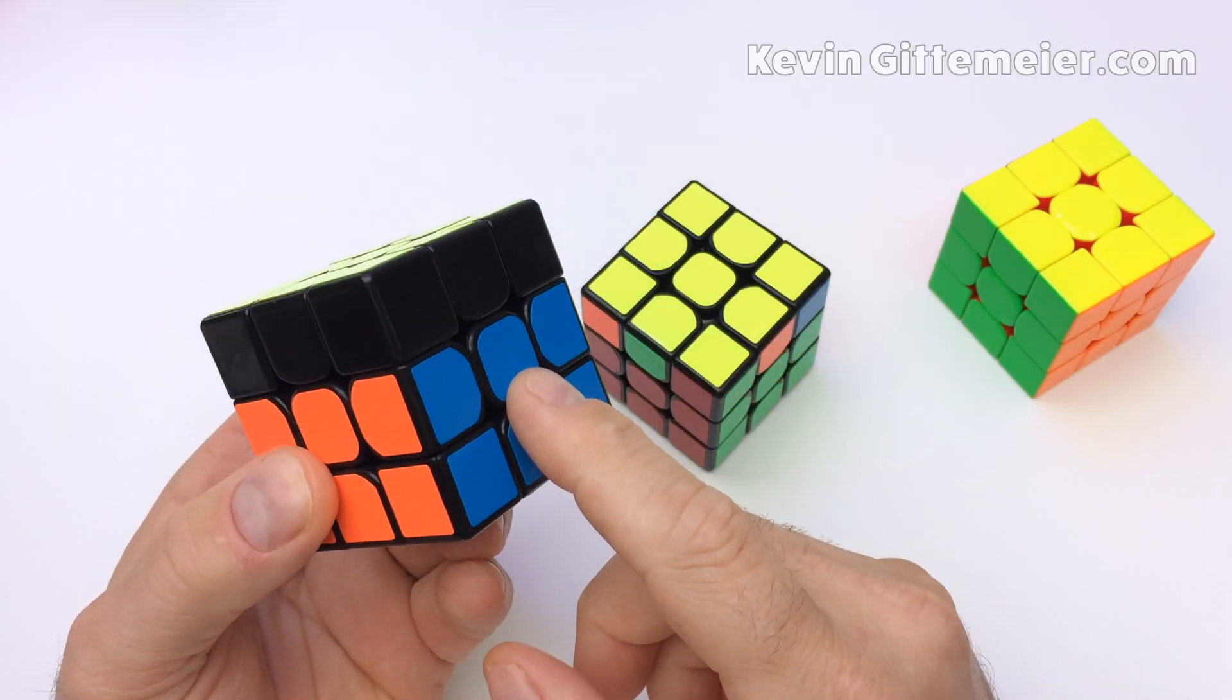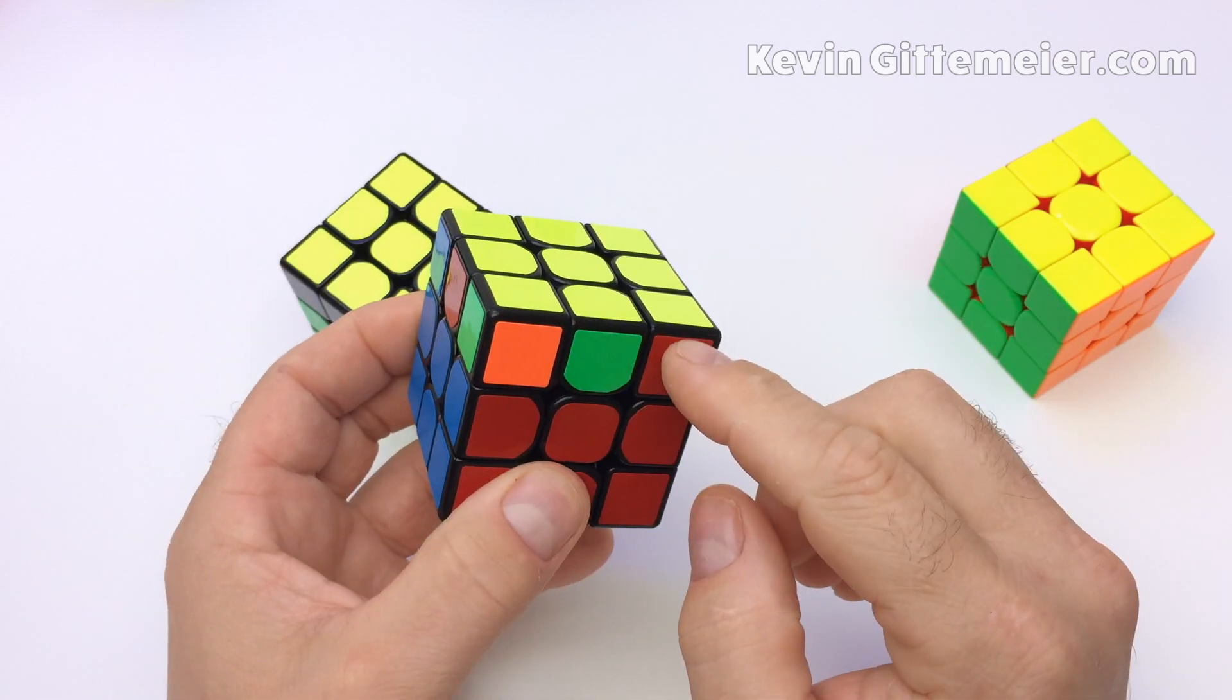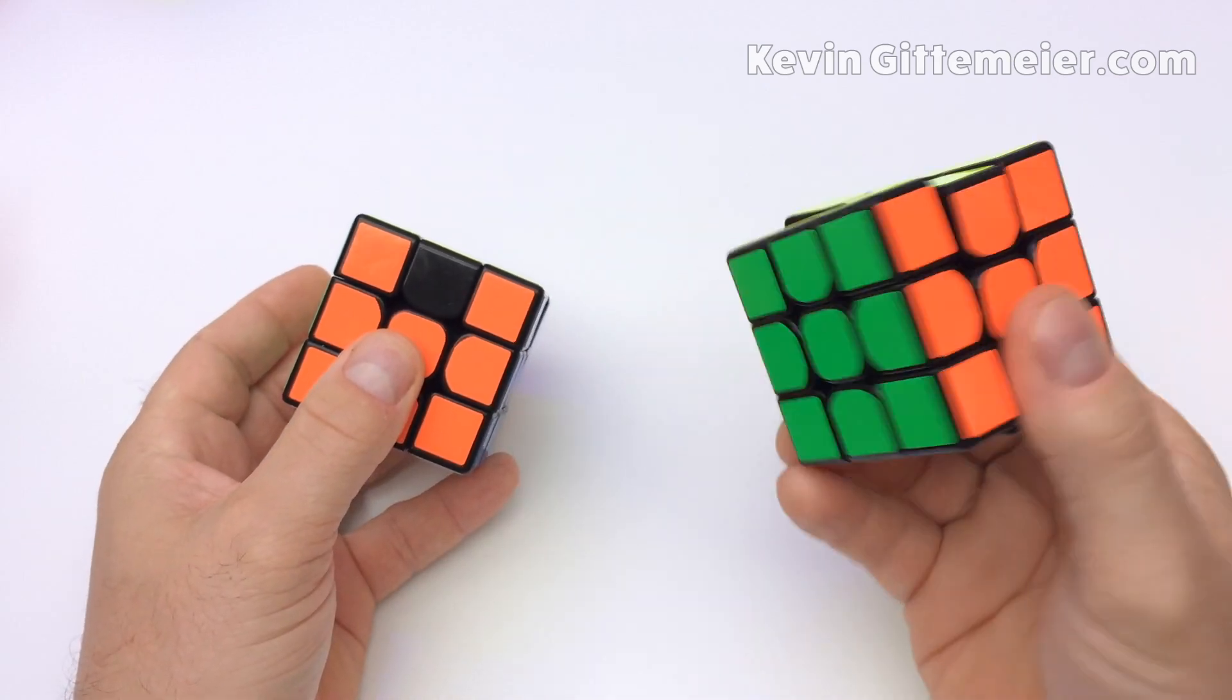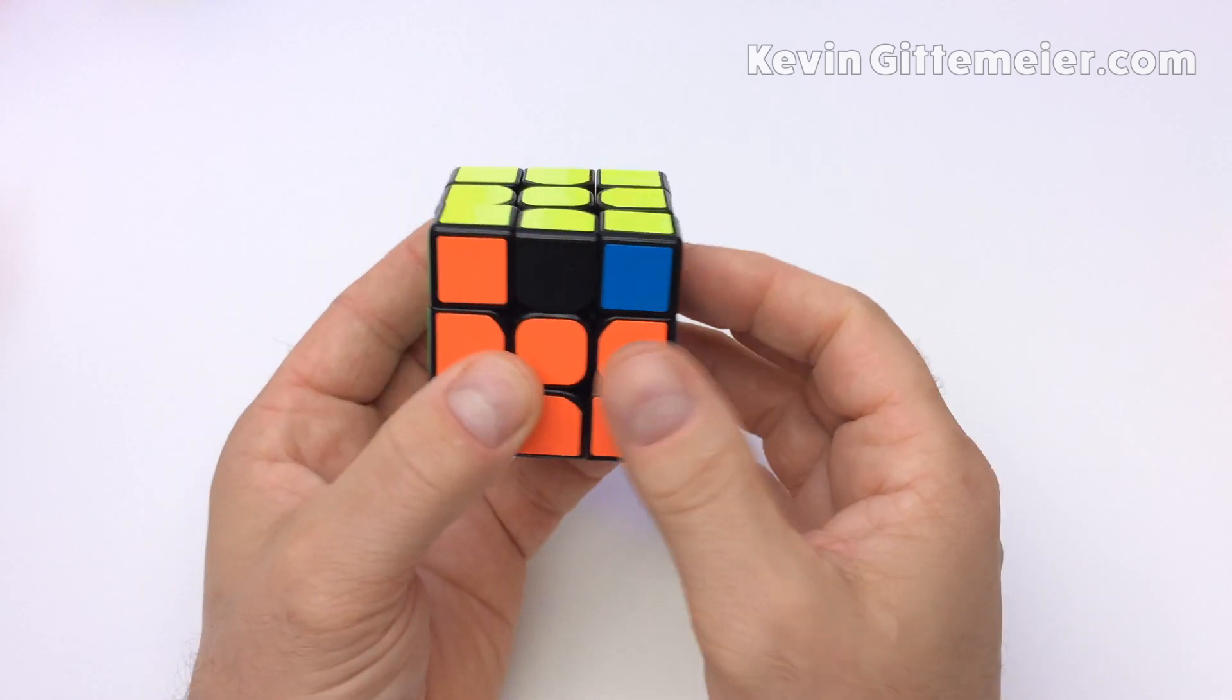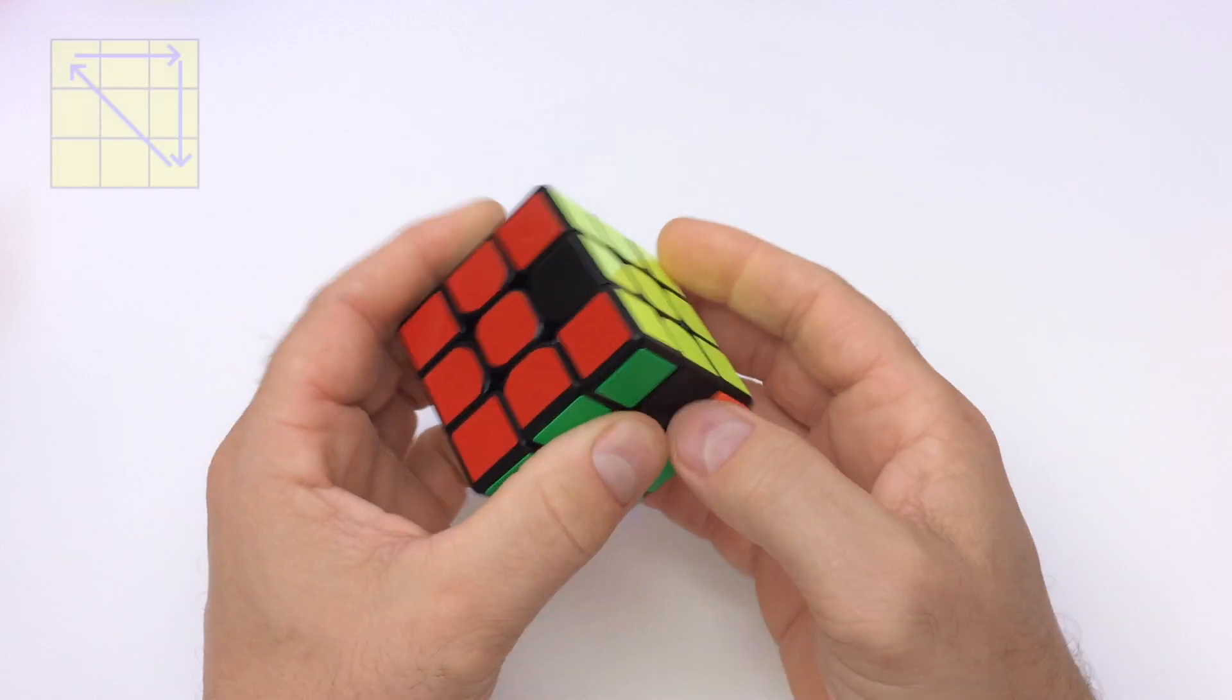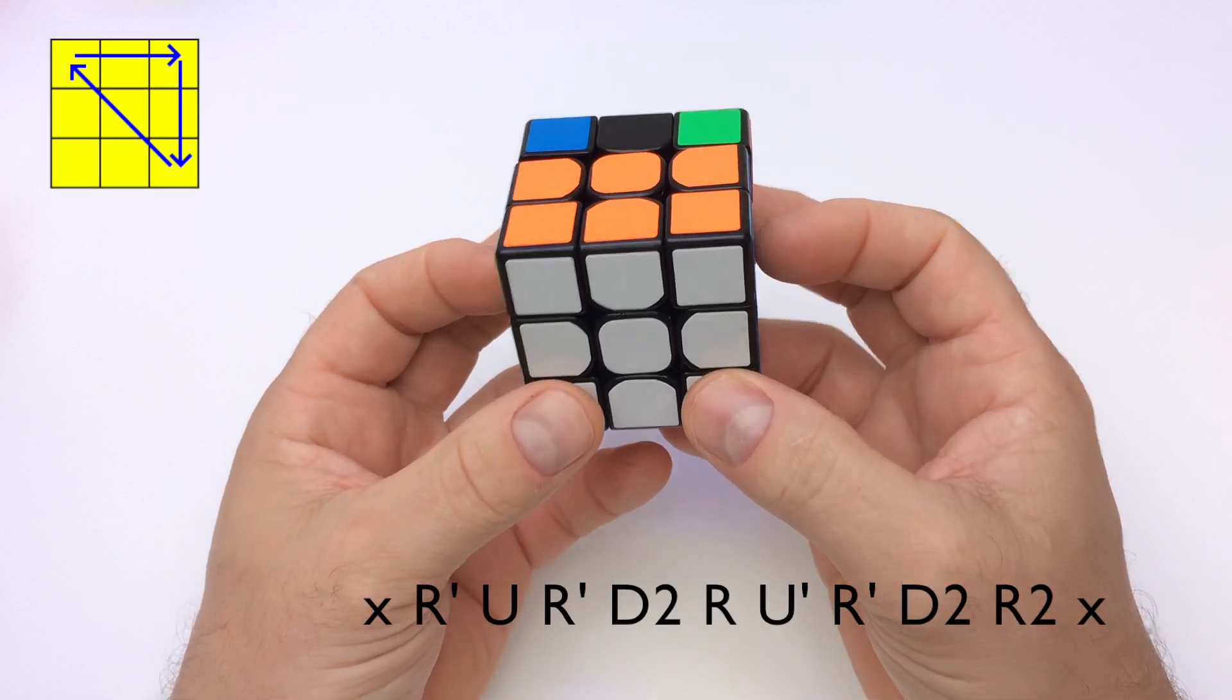We now have our first two layers complete and all the yellows on top we just need to position the top correctly relative to the centers. First we'll fix the corners and then the edges which will solve the entire cube. A quick and simple shortcut to correct the corners is to find a side that has two corners the same color. Place these to the back and perform an axis rotation X.